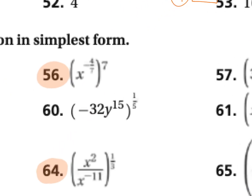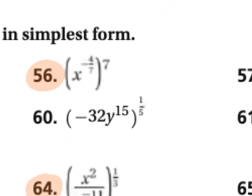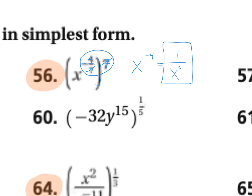Number 56: you have X to the negative four sevenths, and we're taking it to the seventh power. You can just multiply those powers. When you do that, you get X to the negative fourth — the seven over seven is one. X to the negative fourth is one over X to the positive fourth power, and that is your answer.